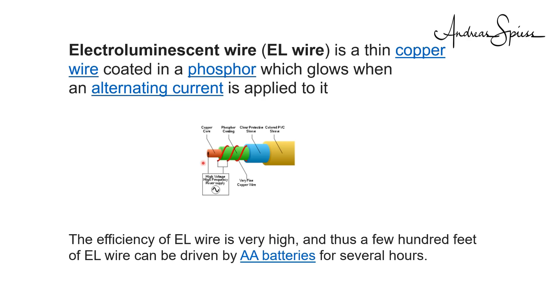EL wire is built from a copper wire, which is encapsulated by a phosphor coating and a copper wire winding. And if we apply alternating current to the two copper wires, then this phosphor starts to glow. It seems that these EL wires are very efficient. AA batteries can illuminate a few hundred feet of EL wire for several hours. So my batteries, for sure, will last forever with this meter-long wire. But we obviously need high voltage and high frequency power supply. So there is some electronics in these battery boxes.